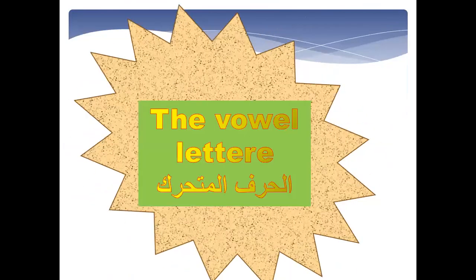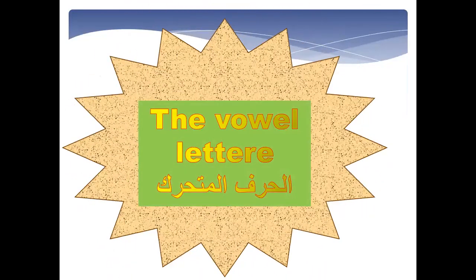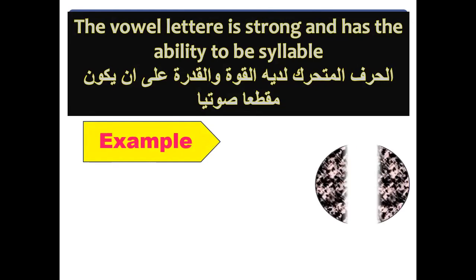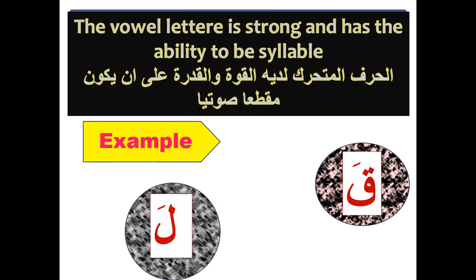Let's start with the vowel letter — Al-harf al-mutaharrik. The vowel letter is strong and has the ability to be a syllable on its own. For example: 'klab' — each vowel letter forms a syllable.